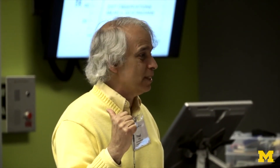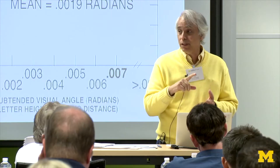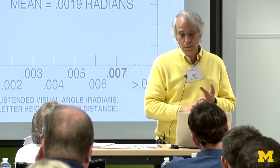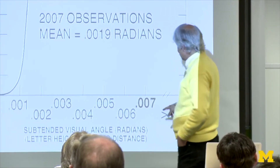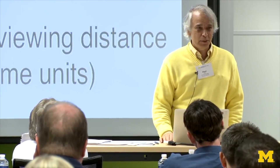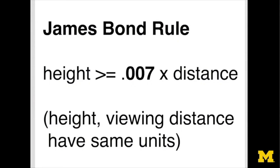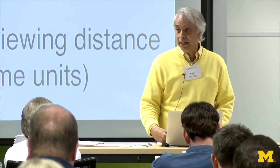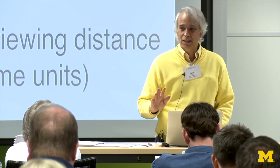So therein lies the challenge: what's the acceptable probability that people can read it, as a function of everything varying — age, lighting conditions, et cetera? This has led to what's known as the James Bond Rule. Take the distance, multiply it by 0.007, and if you're at least that big, you can be reasonably comfortable that for a wide range of viewing conditions and a wide range of viewers, people can see it. I like that because you can memorize it. Will that sometimes lead to things that are too big to fit? Yes. But if you pass this, you can be sure people can read it.